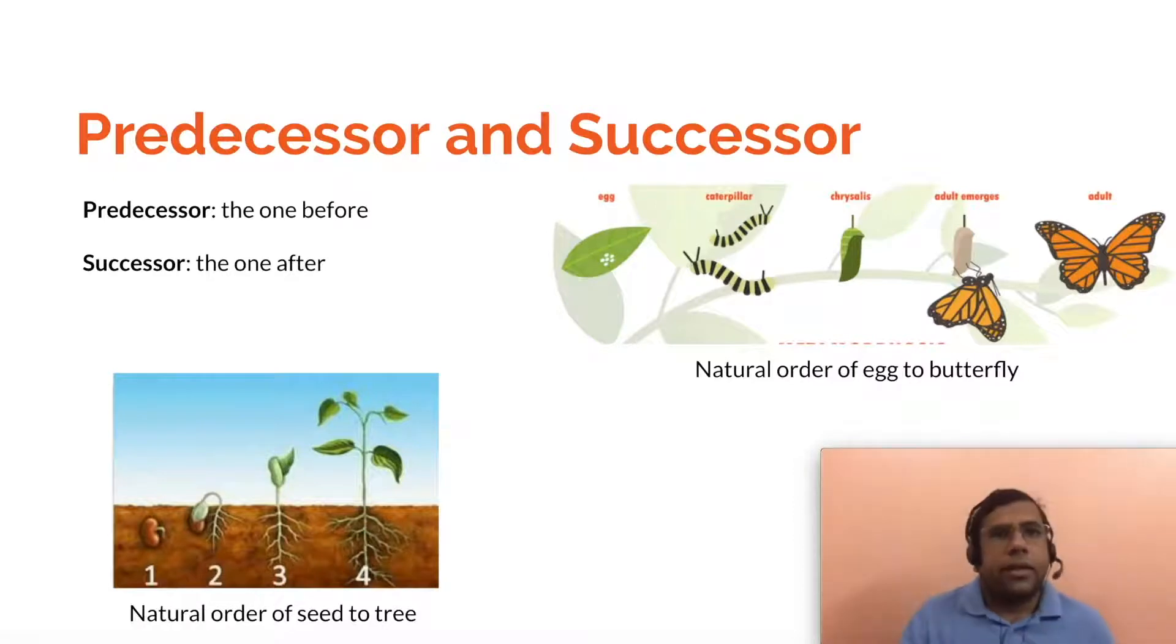So what is the predecessor and the successor? If you look at it in nature, there is definite order in terms of what things happen. For example, when a seed becomes a tree, there is an order in which a seed grows and becomes a tree. So there are some things that precede the growth of the tree and there are some things that succeed the planting of a seed.